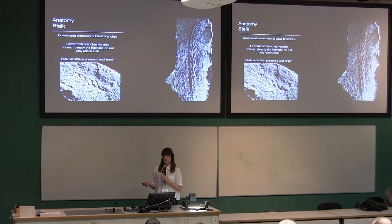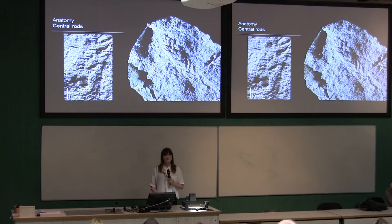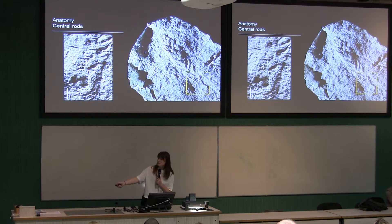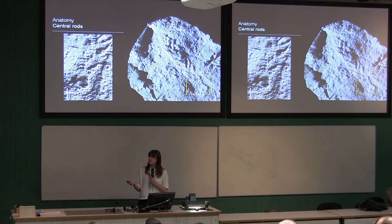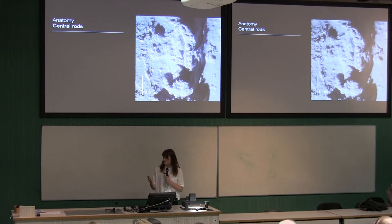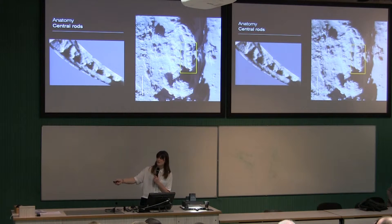The redescription of this area has allowed us to confirm something first described by Narbonne in 2009 — the presence of central rods. Here is a Charnia from Charnwood Forest, and zooming in we can see the holdfast and these odd-looking branches. What's clear is this naked rod and the bifurcation leading to the lowermost primary branches. We also see this in an undescribed rangiomorph from Newfoundland — with the holdfast and frond visible, we can quite clearly see this naked rod structure running up the length of the organism. We interpret these as infolded primary branches.